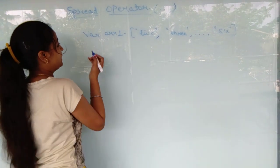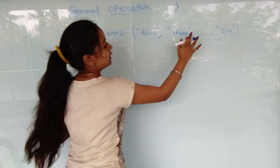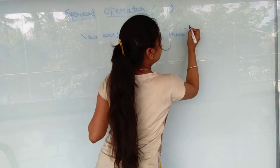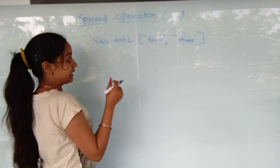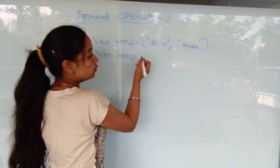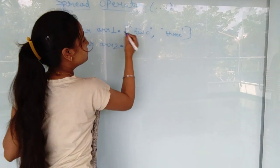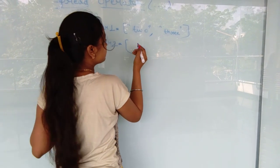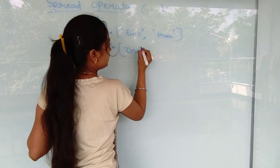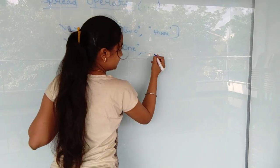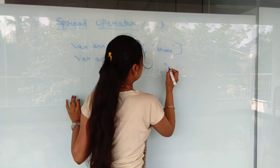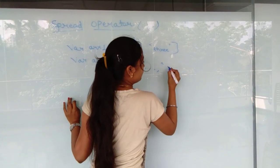Now in the second variable we will write... sorry, here we will not take that. Here we will just skip this. Okay, so for the second variable we write var array equals to, here we write one, here spread operator, and here we write four.